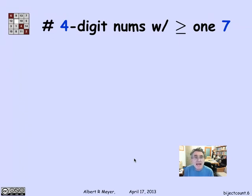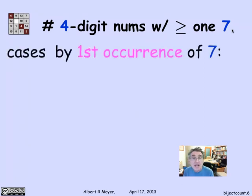Suppose that I want to count the number of four-digit numbers, where the elements are 0 through 9, so there are 10 possibilities, with at least one 7. The number of four-digit sequences of digits that have at least one 7 in them. One way to count is I can make it a sum of different four-digit numbers containing one 7 depending on where the first 7 is.